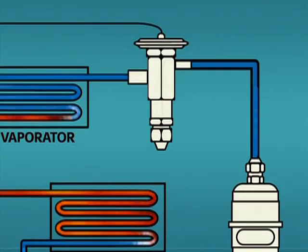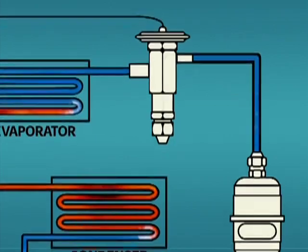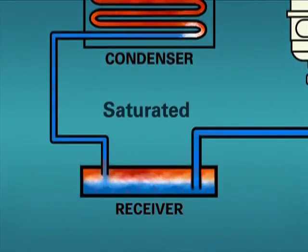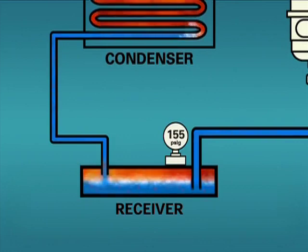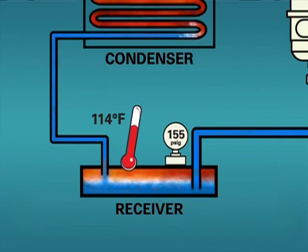With most systems, one can expect to find the refrigerant in the liquid line to have some amount of subcooling. In particular, systems employing a TEV should have subcooled refrigerant liquid entering the valve. When a system employs a liquid receiver, we will find saturated refrigerant at the liquid vapor interface in the receiver. If the measured pressure in the receiver is 155 PSIG, we know the temperature at the refrigerant level to be 114 degrees Fahrenheit. The fact that saturated refrigerant exists in the receiver does not mean subcooled liquid cannot exist in a receiver. If the condenser provides subcooled liquid to the receiver, subcooled liquid will be present in the receiver also.